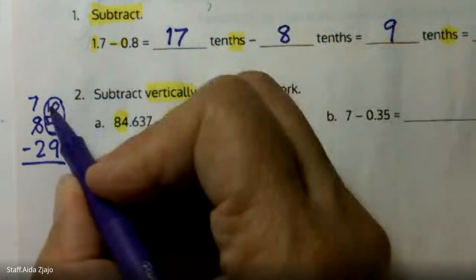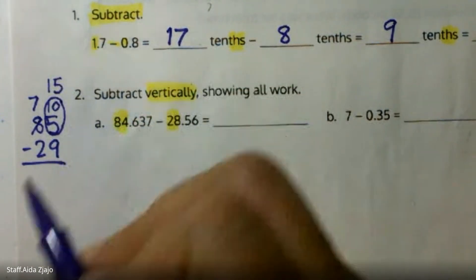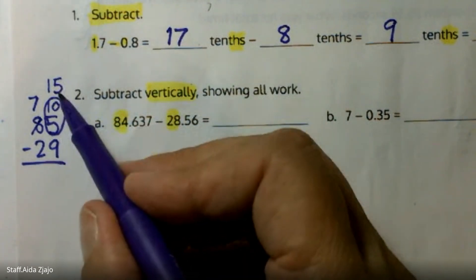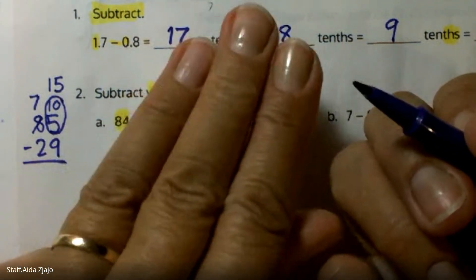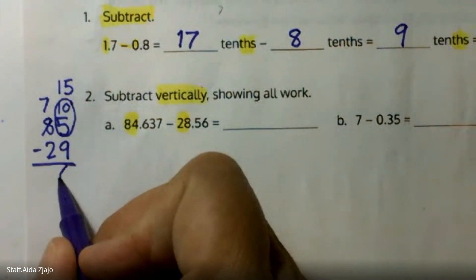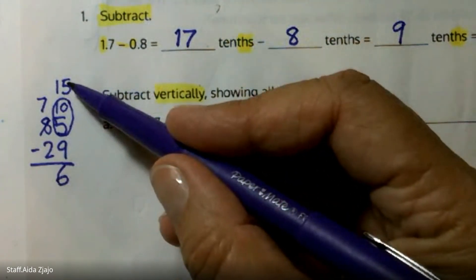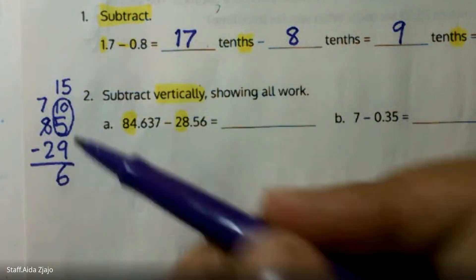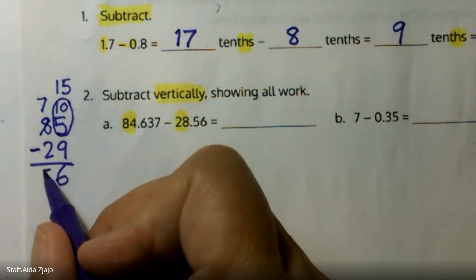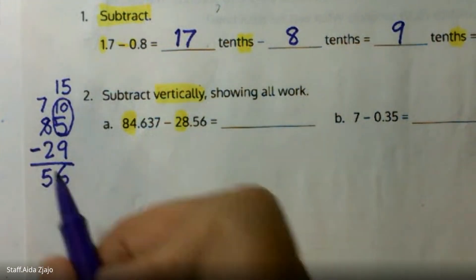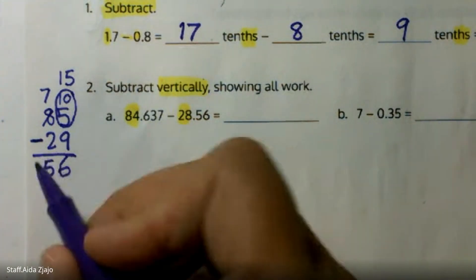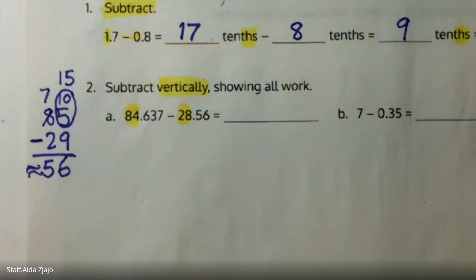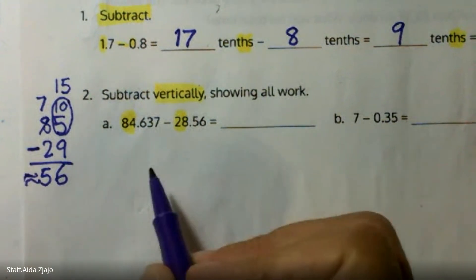Adding those together I have 15. So 15 minus 9 — think: what number plus 9 equals 15? Counting on: 10, 11, 12, 13, 14, 15 — it's 6. You can check: 6 and 9 makes 15. Then 7 give away 2 — what number plus 2 equals 7? Subtraction and addition are a family, so you can always check subtraction with addition. So my estimated answer is about 56 whole dollars.